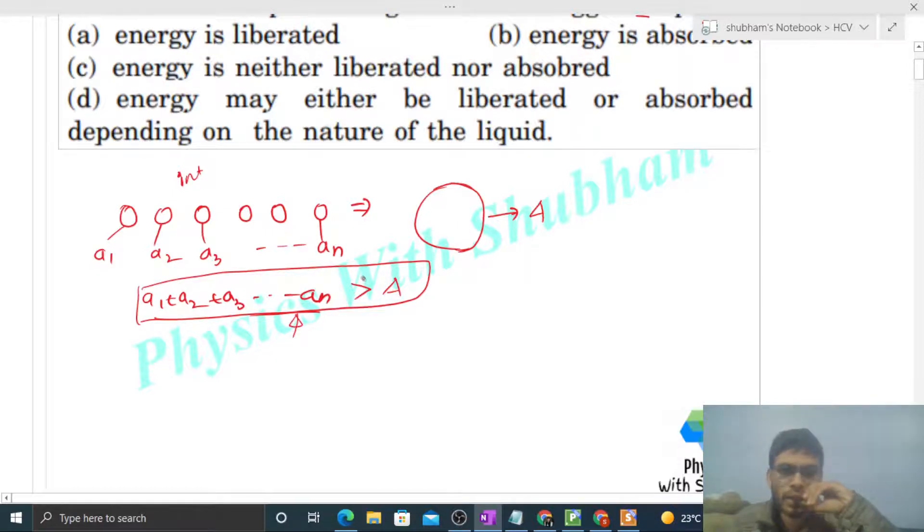We know that the initial surface area, the initial total surface area is higher. It means the initial total surface energy will be higher. Initial surface energy, or you can say initial potential surface energy, will be higher than final surface energy, right?